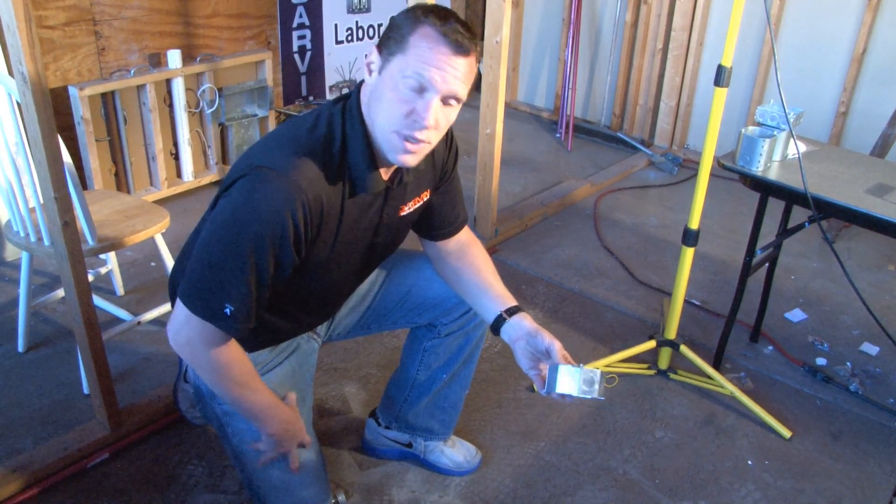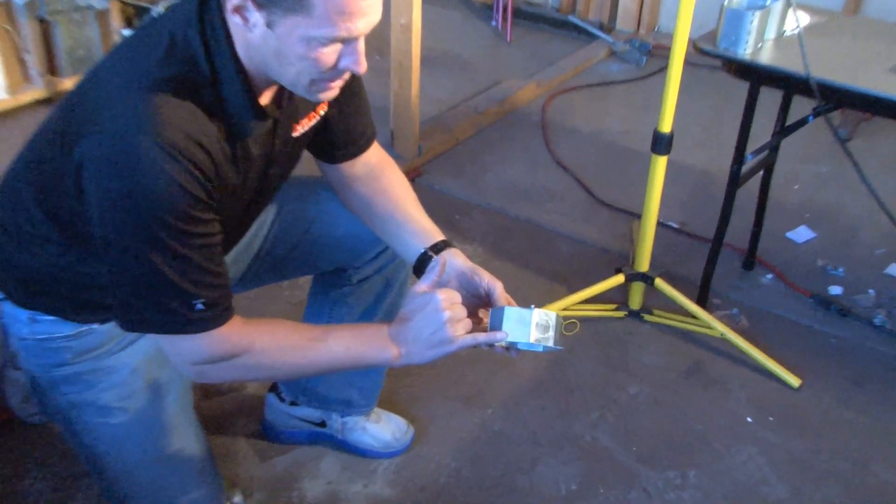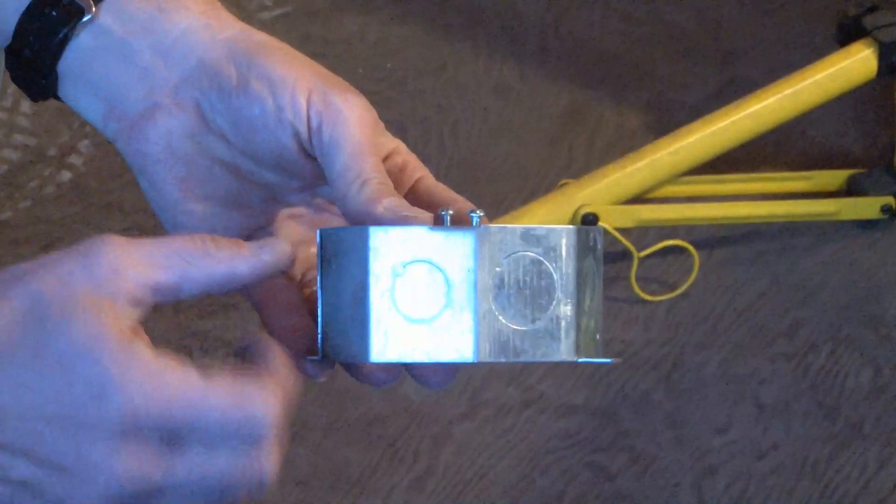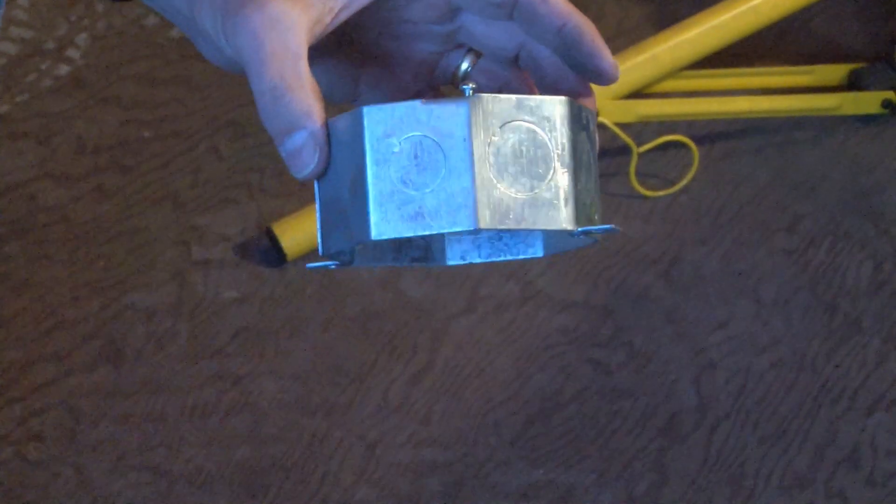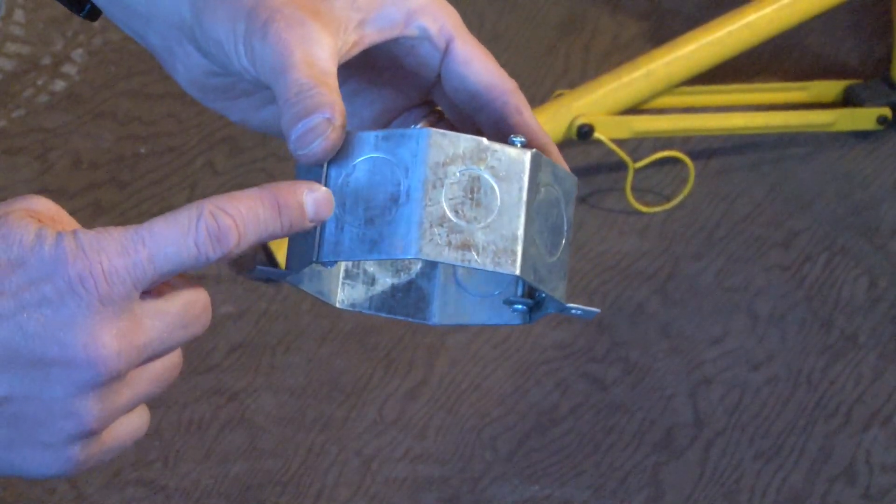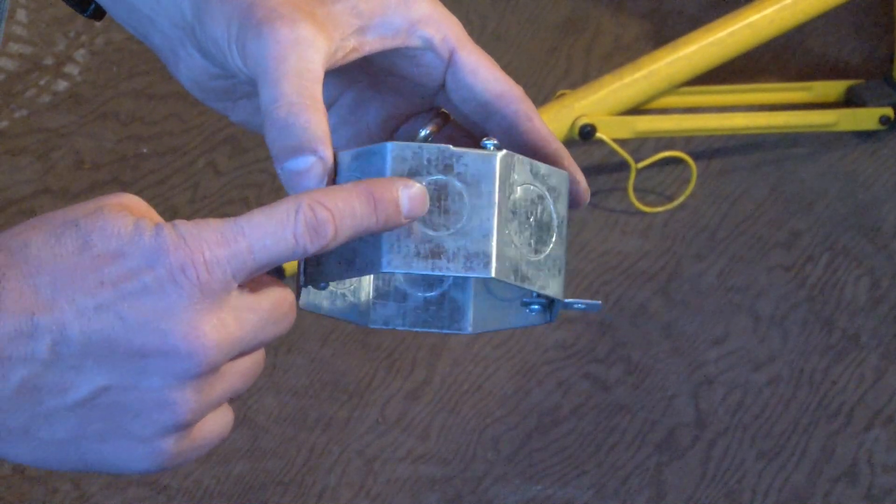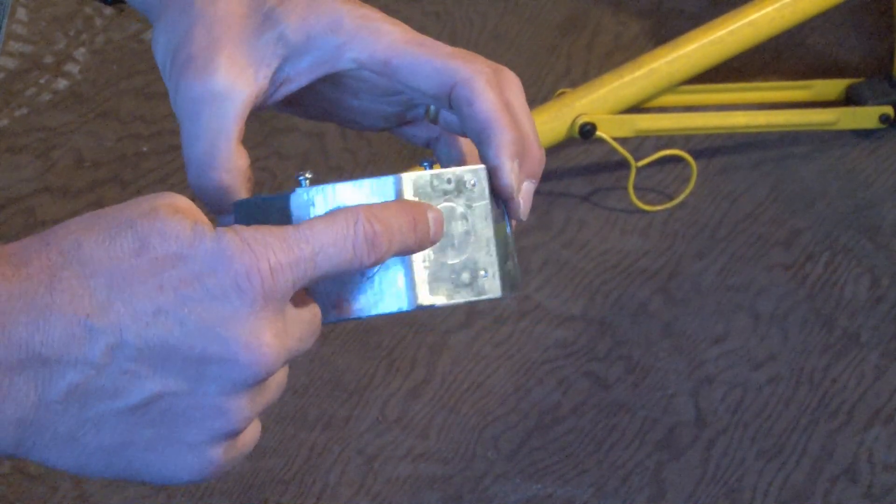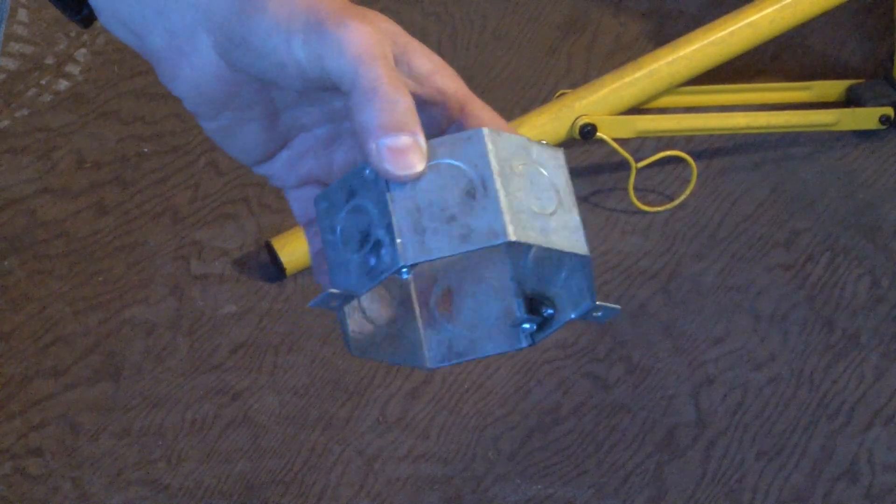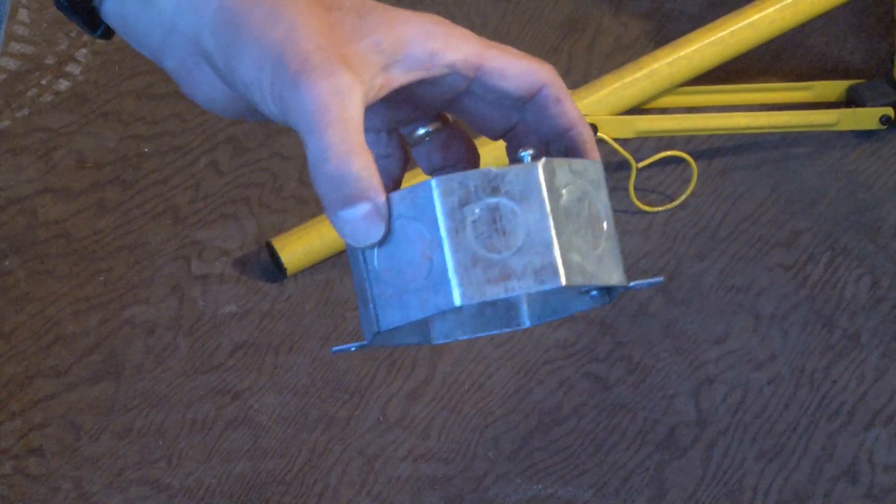Part number OCR 200 is a two inch deep octagon concrete ring that is used in poured concrete construction. This particular box has offsetting three quarter and half inch knockouts all the way around the octagon ring on the sides of the box.